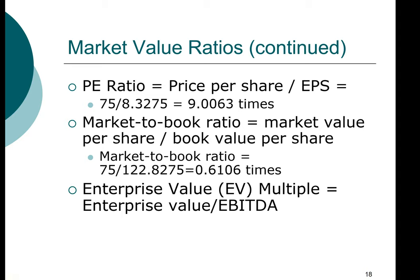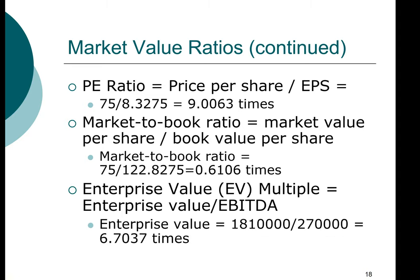This tells us how much cash operating income the firm is generating relative to the market value of the entire firm. We computed the enterprise value to be $1.81 million, and we use the EBITDA computed earlier when we calculated the cash coverage ratio. The answer for this company is 6.7 times — the value of the firm is 6.7 times the cash flow it generates. This concludes the calculation of the market value ratios. The importance of market value ratios is to help you identify whether a company is a good investment, in addition to its operating or financial performance.